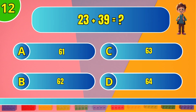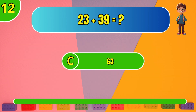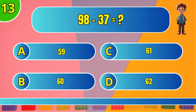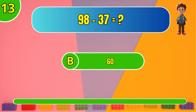What is 23 plus 39? C: 63. What is 98 minus 37? B: 60.